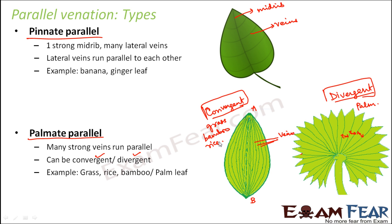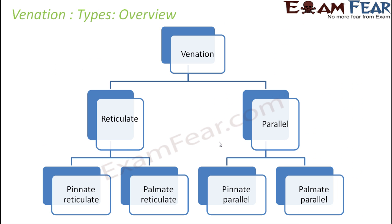To conclude venation: venation is the arrangement of veins on the lamina of a leaf. There are two types: reticulate venation, where veins and veinlets are arranged haphazardly forming a network; and parallel venation, where all veins are arranged parallel to each other. Reticulate venation has two subtypes — pinnate reticulate (one strong midrib, lateral veins haphazardly arranged) and palmate reticulate (many strong ribs, lateral veins haphazardly arranged). Similarly, parallel venation has pinnate parallel (one strong midrib, lateral veins parallel) and palmate parallel (many strong ribs, lateral veins parallel).